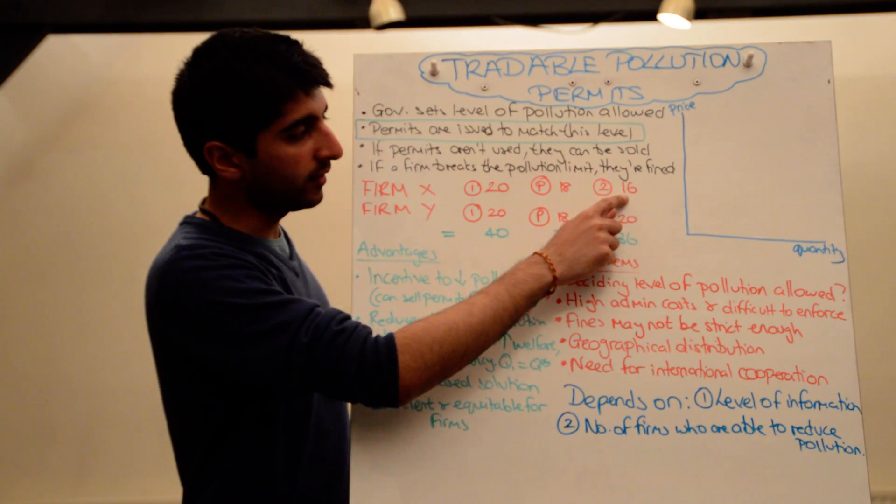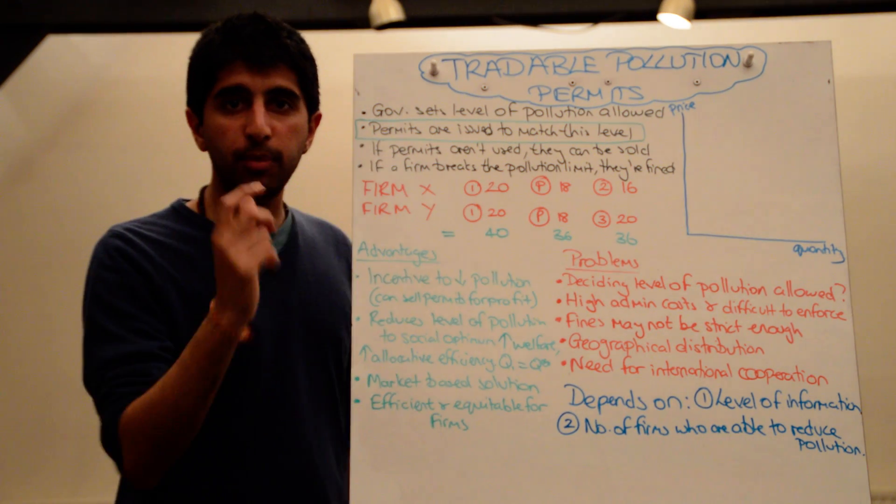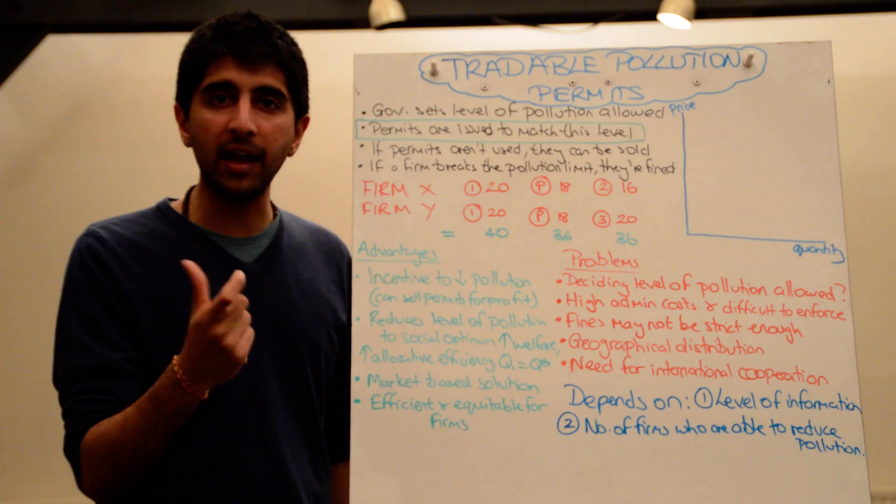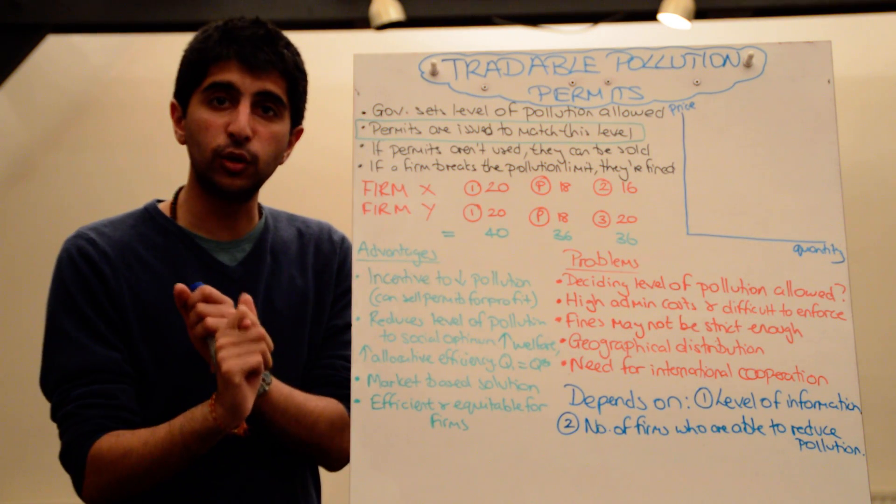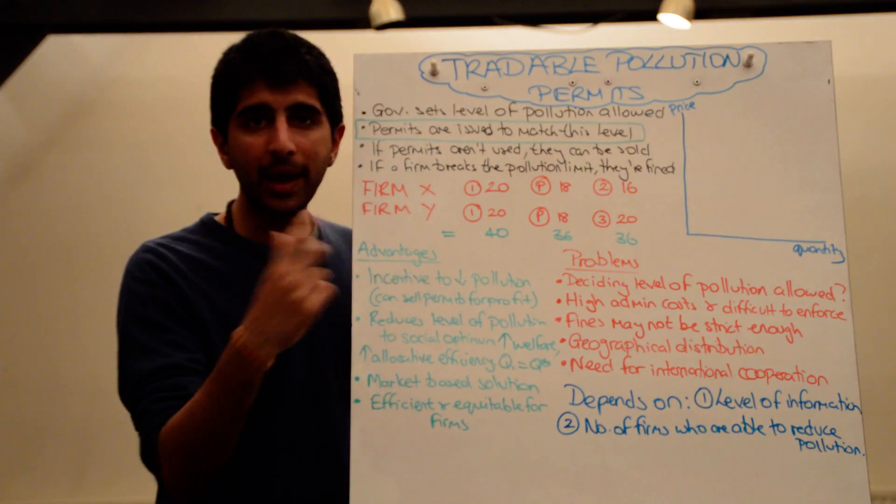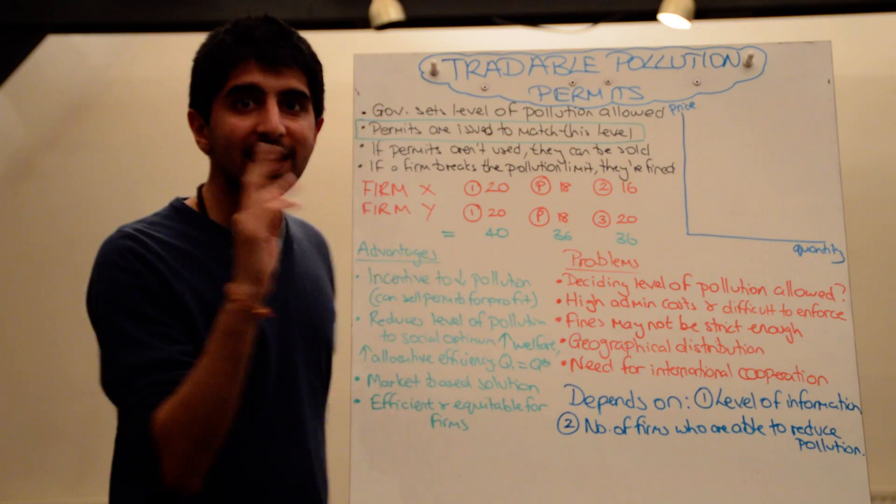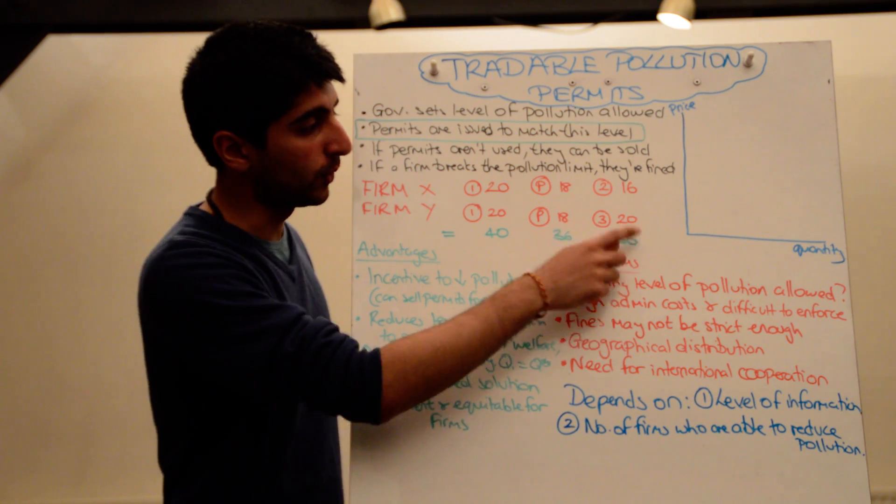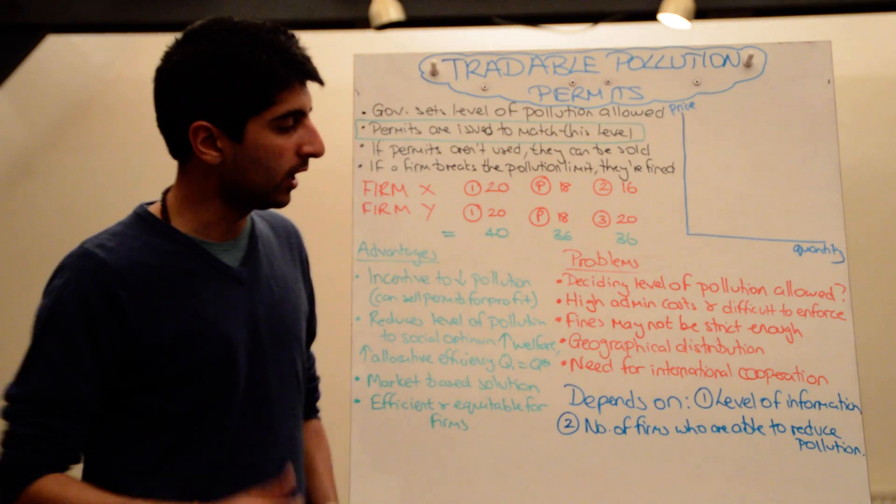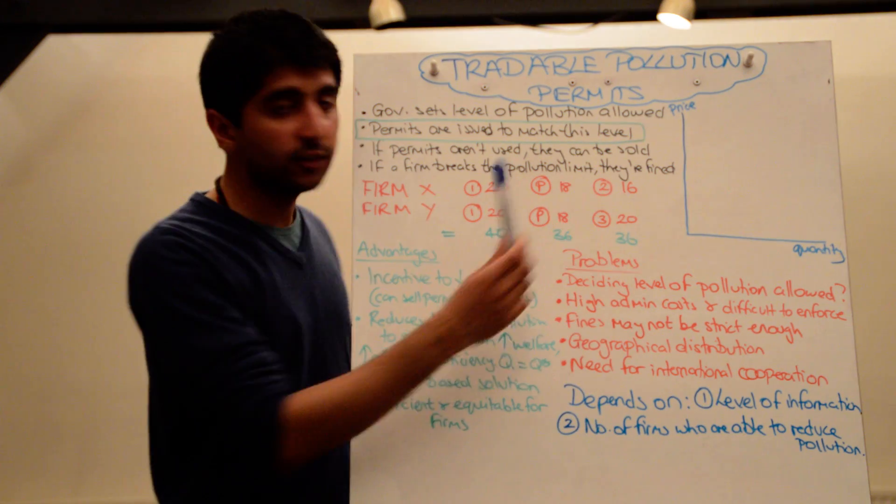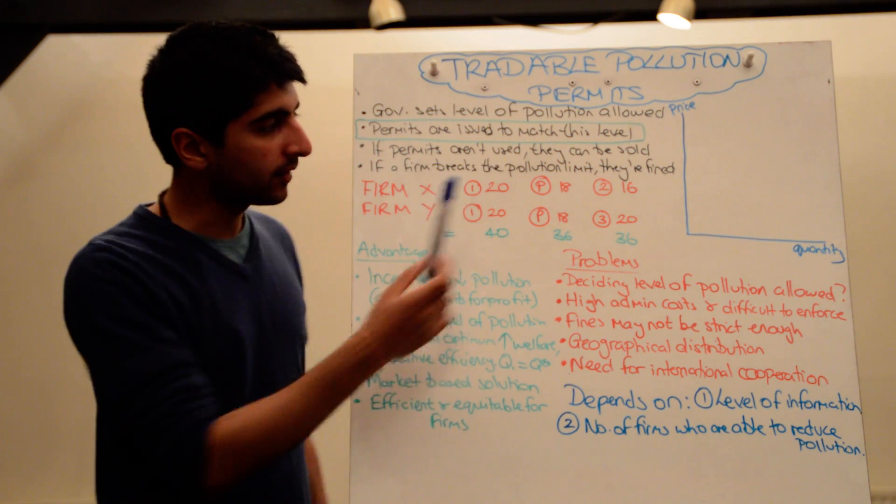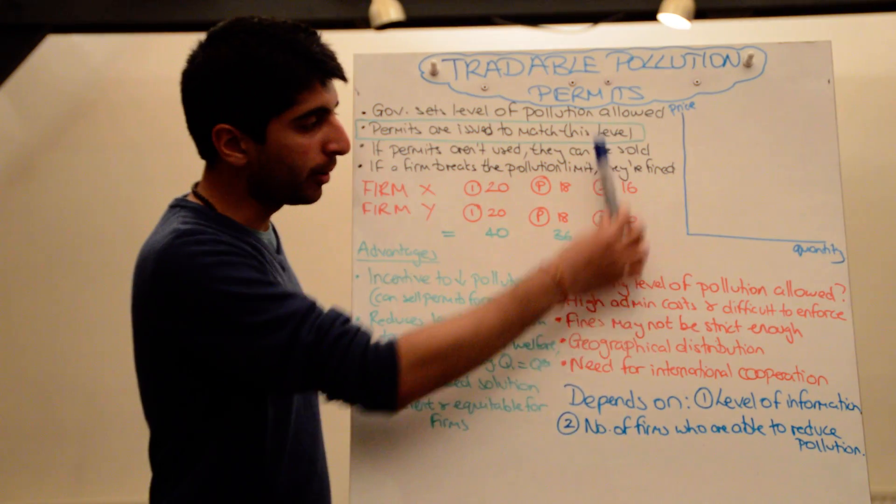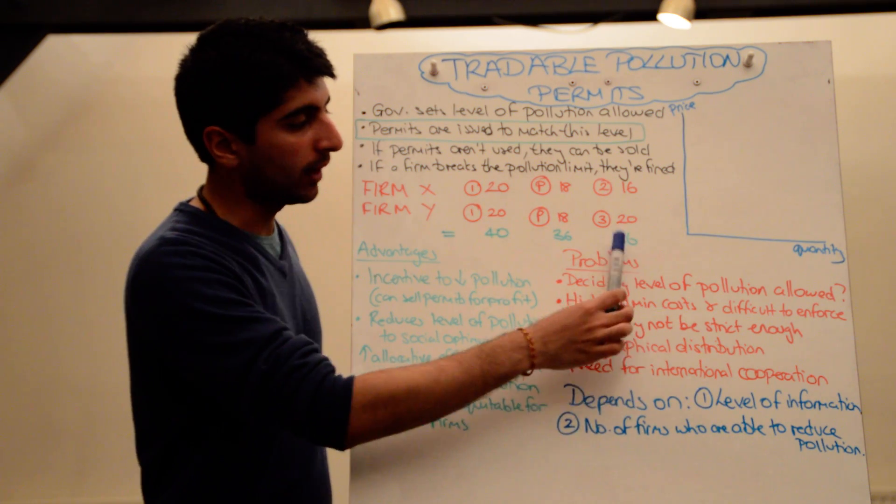Actually, that solution is viable because firm Y can buy up two excess permits from firm X. Firm X, by reducing to 16, has got two units of pollution spare. Two permits spare if each permit is for one unit of pollution. It's got two spare now, and firm Y needs two permits to continue to pollute at 20, considering it's now two units over what it's allowed to produce. So for firm Y, they can buy two permits from firm X. And overall, the level of pollution still gets to the allowed level of 36.